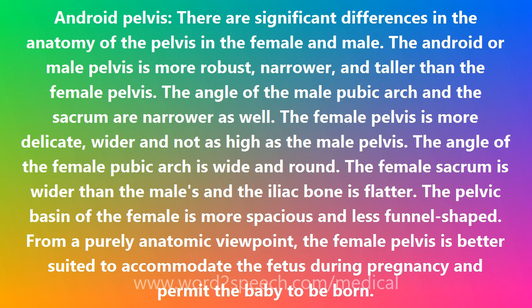The female pelvis is more delicate, wider, and not as high as the male pelvis. The angle of the female pubic arch is wide and round. The female sacrum is wider than the male's and the iliac bone is flatter. The pelvic basin of the female is more spacious and less funnel-shaped. From a purely anatomic viewpoint, the female pelvis is better suited to accommodate the fetus during pregnancy and permit the baby to be born.